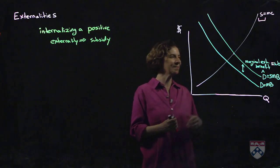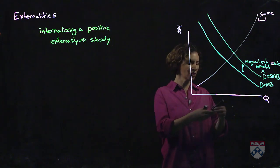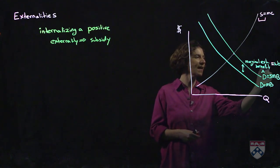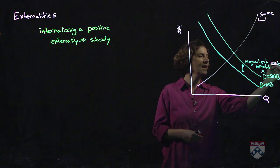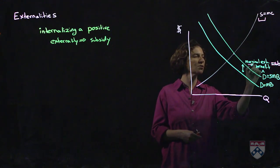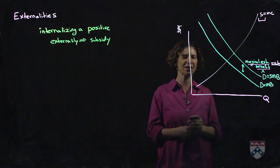Let's think through this graphically. What we're going to do is set a per unit subsidy that is exactly equal to the marginal external benefit.